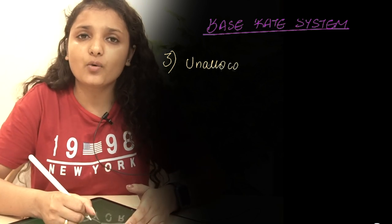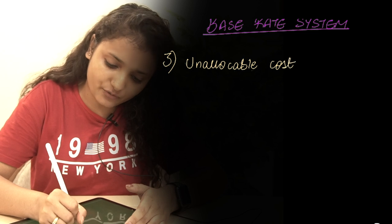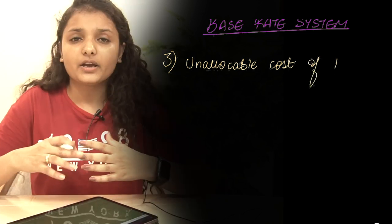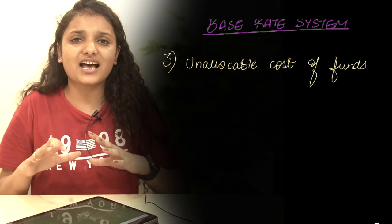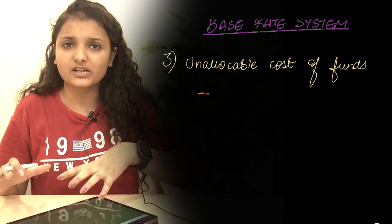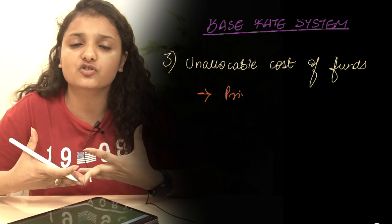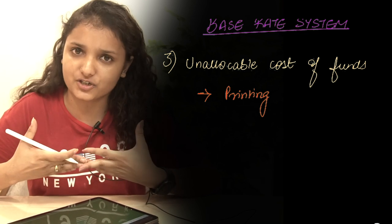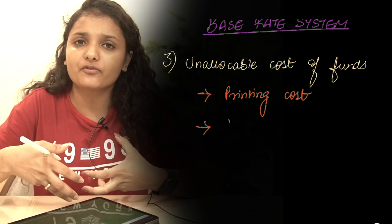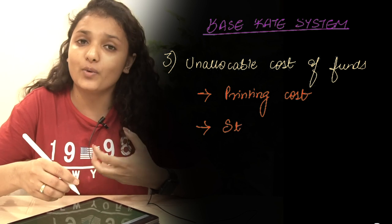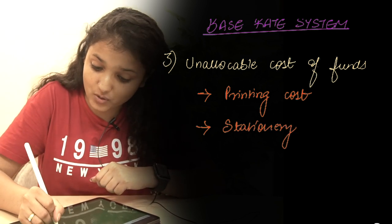The third component is the unallocable cost of funds. Here the cost for the bank is taken as a whole and no individual units are taken while calculating the interest rate. Examples of this kind of cost include printing cost and stationery cost.